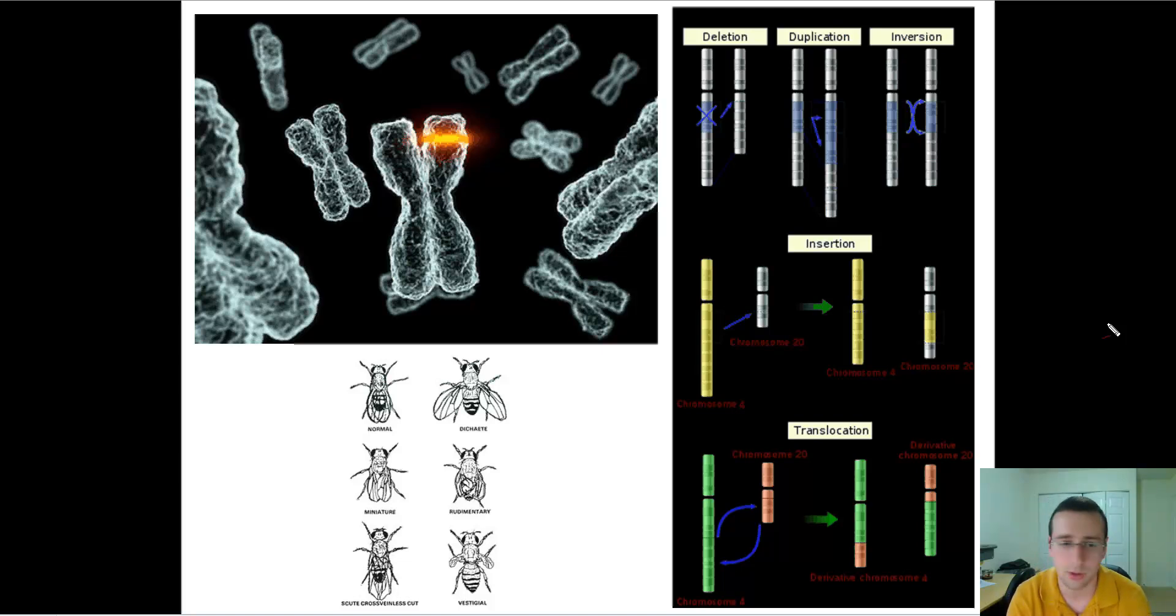or the translocations from pieces from one chromosome to another chromosome that's not necessarily its homologous pair. And you can either do that as a balanced translocation or an unbalanced translocation, which is sometimes called an insertion.